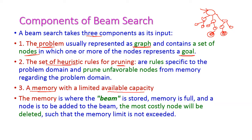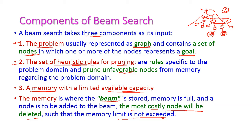The second component is a set of heuristic rules for pruning. If the beam size is 2, then we need to select only the two nodes whose heuristic value is minimum. By applying those heuristic rules, we prune unwanted sub-trees or unfavorable nodes. The third component is memory with limited available capacity. Here we set the beam size. If memory is full, the most costly node will be deleted from the open list, so the memory limit will not be exceeded.